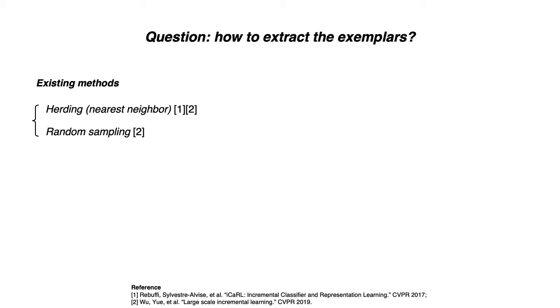Existing methods are mostly about herding, that is, picking up the nearest feature of mean representation, or simply using random sampling. They are heuristic and less likely to be optimal. In addition, their selection is always limited to a finite training set.